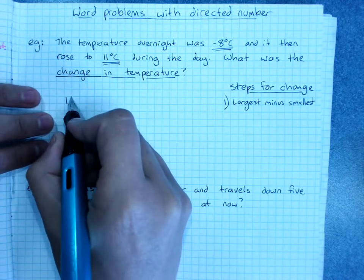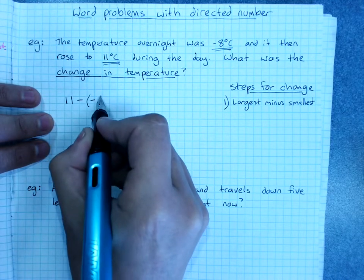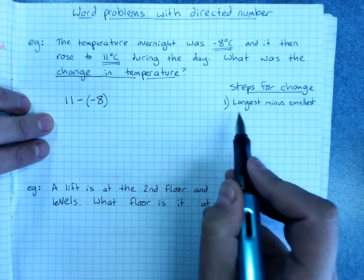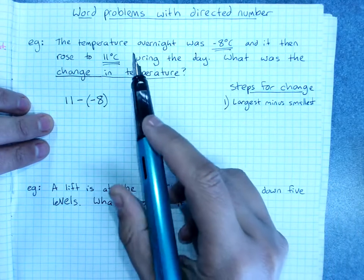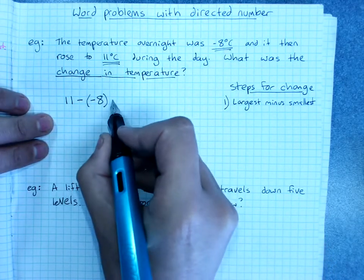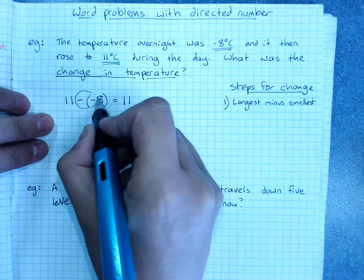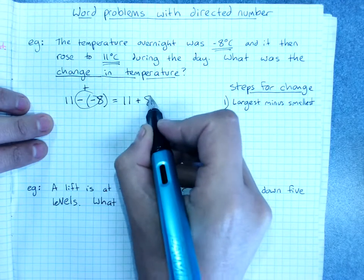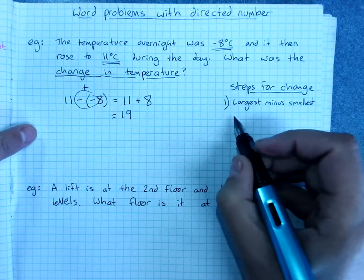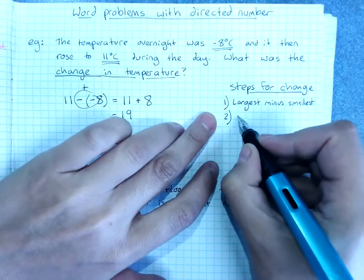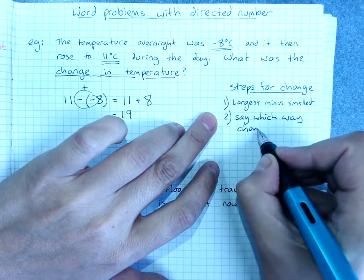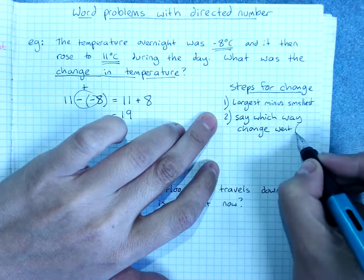So you'll do 11 minus negative 8. It's not 11 minus 8 because you're doing the largest value minus the smallest value, largest minus the smallest of negative 8. So that will be 11 minus a negative is plus, plus 8 which is 19, and then you have to say which way the change went and include units.